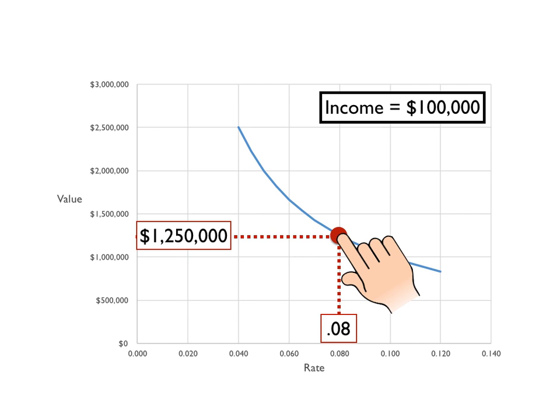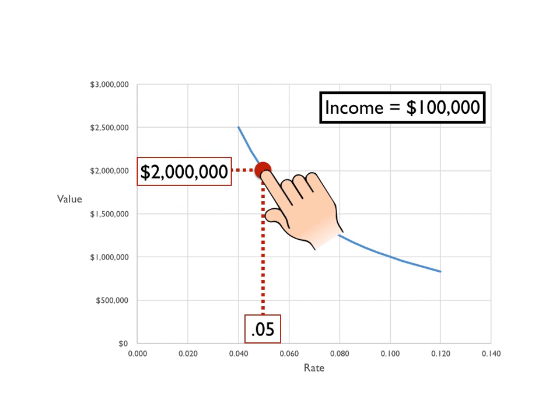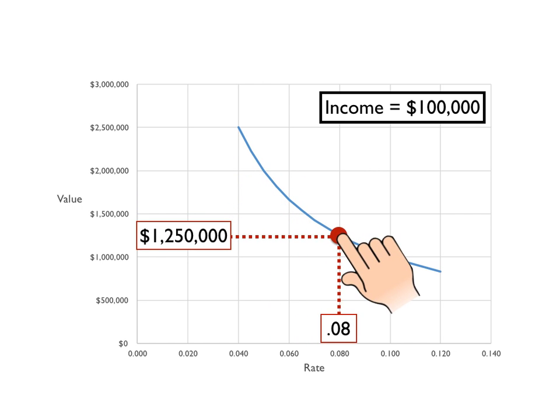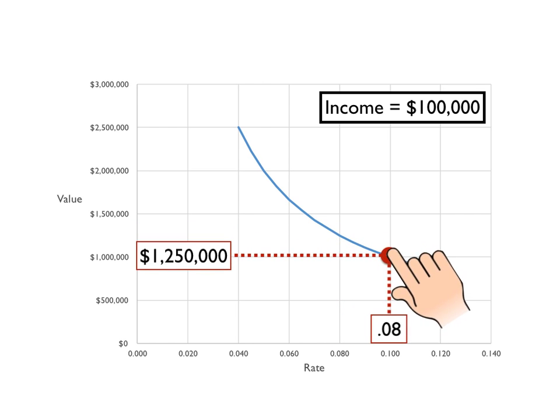So we could change the value if we were trying to figure out what the rate would have to be in order to get a value of $2 million. We just move the line up to $2 million and that would calculate the rate for us, and vice versa. We could go the other direction. If the market rate was 0.10 or 10%, we would move it down there and that would tell us what the value would be.